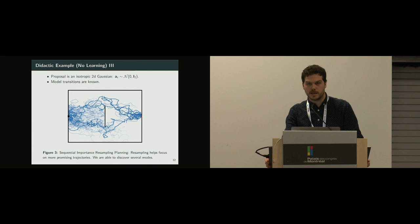And if we resample, then again, I repeat, no learning, no value function. The policy is from an isotropic Gaussian, so normal is 0-1, and the transitions are known. And here, using the resampling scheme, we see that focusing our energy on the most promising trajectories allows us to capture both modes and to reach the goal.